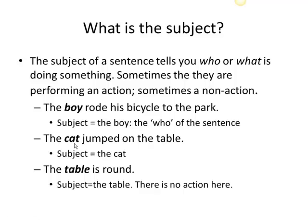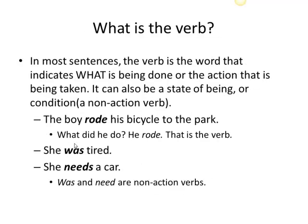In the third example, you have a table. A table is a thing and it cannot perform an action, however it is the subject of the sentence. When talking about a verb, the verb tells you what is being done or what the action is. It can also just be a state of being or a condition, which is a non-action verb.